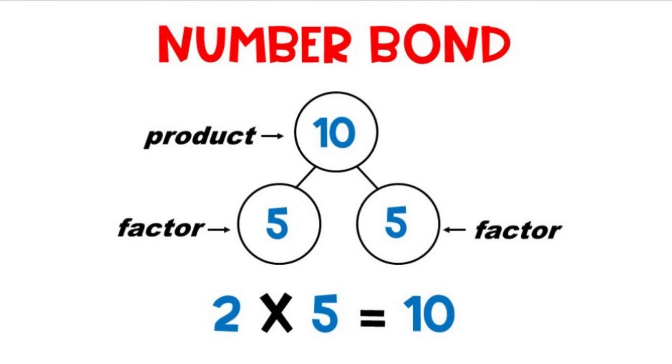Number Bond. A multiplication number bond has a product and factors, like this one.